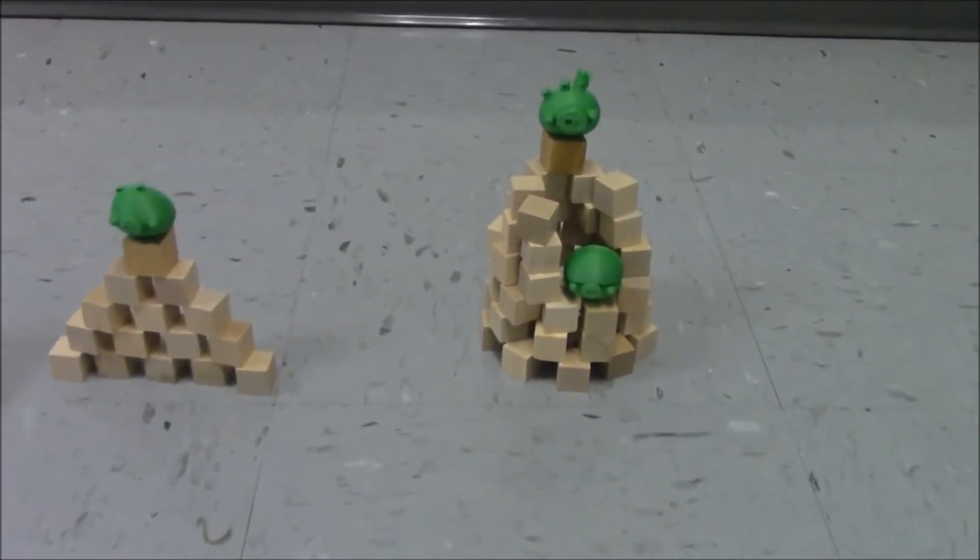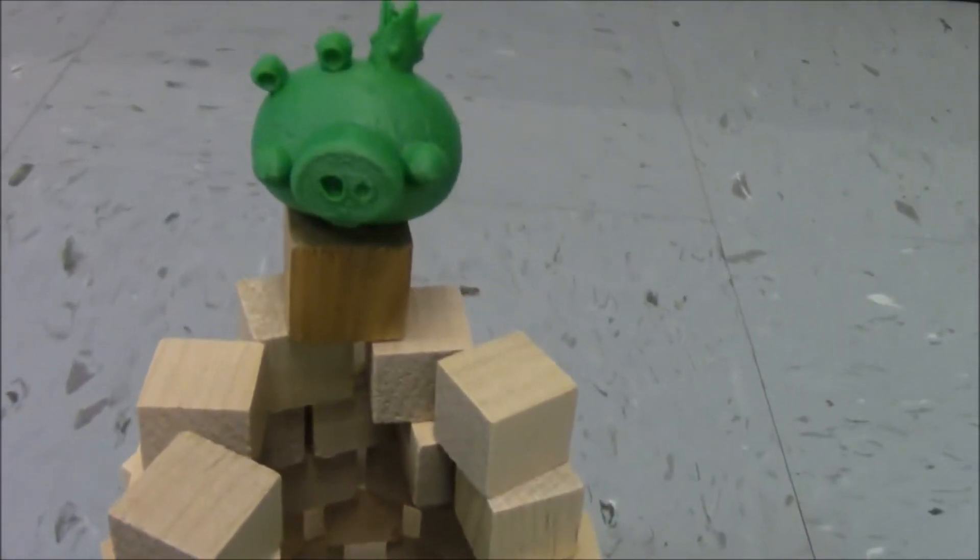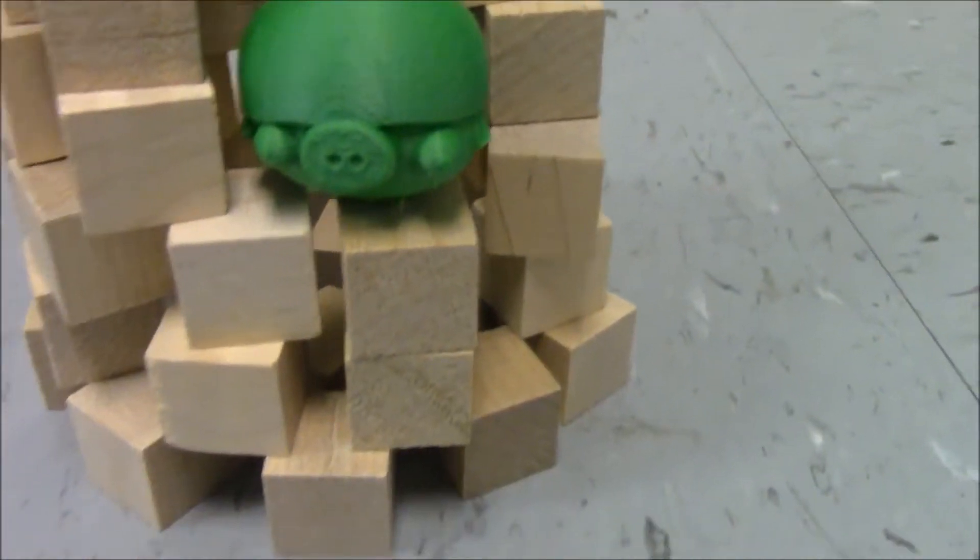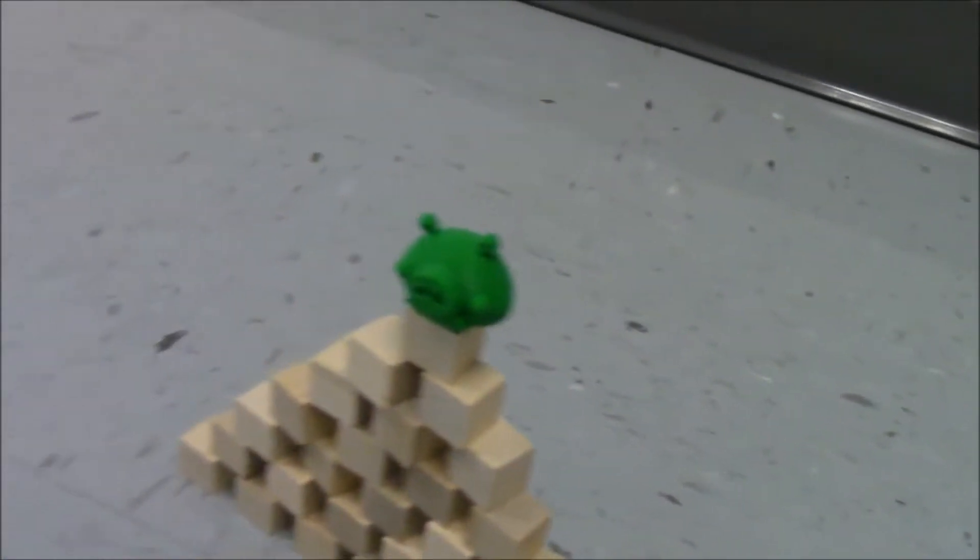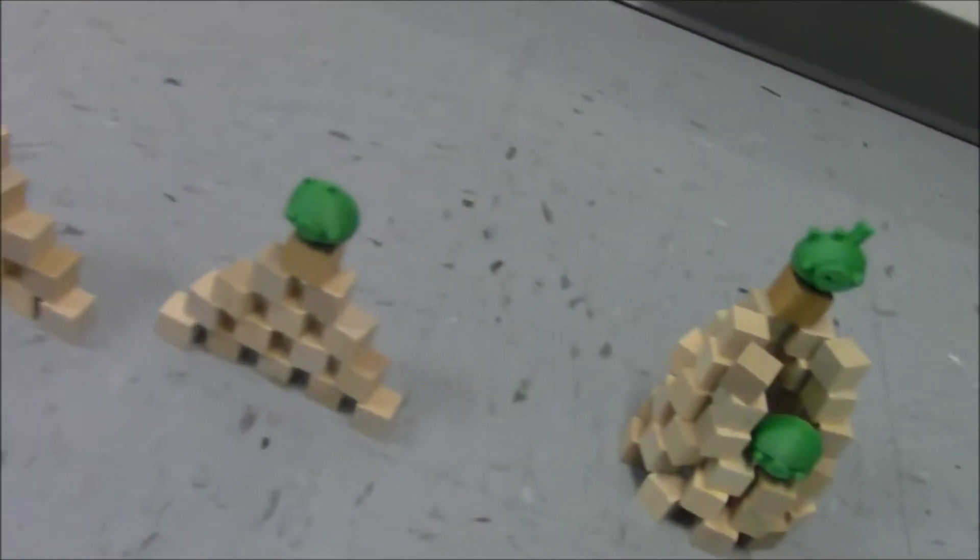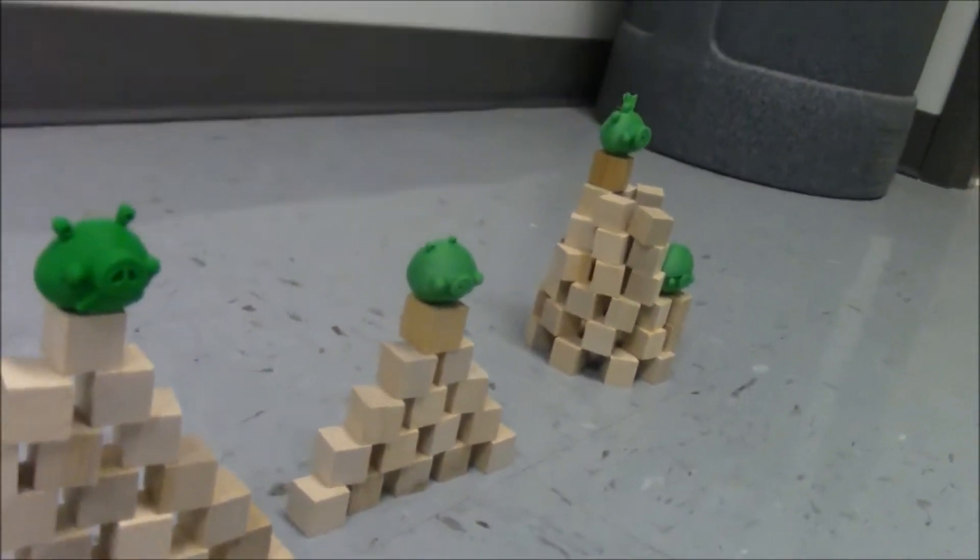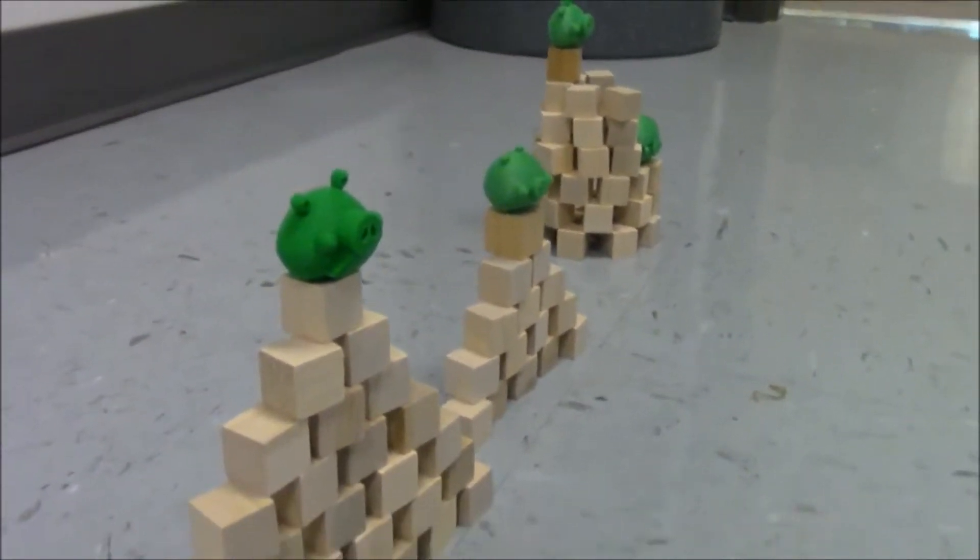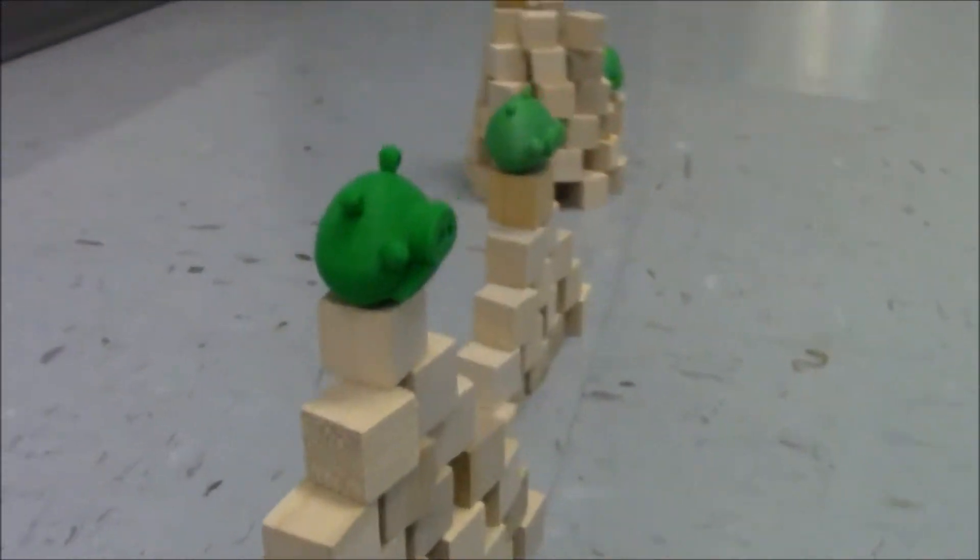Your objective is to get the pigs from at least 30 feet away. You have angry birds and you have to build a trebuchet, not a slingshot, to knock these guys down.